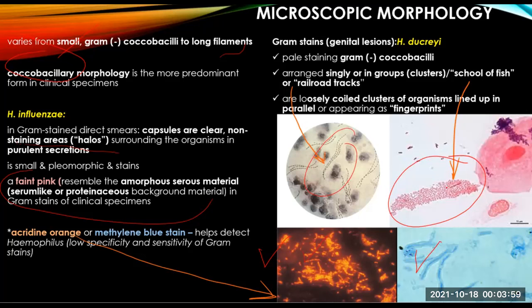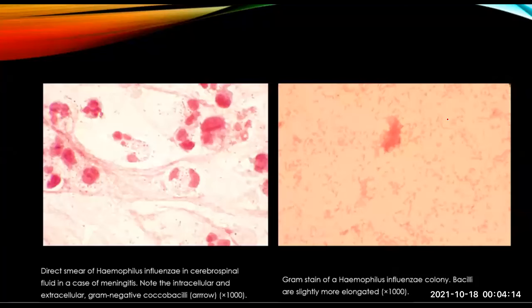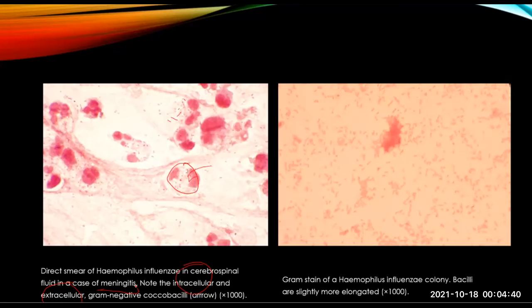These are common board exam questions: school of fish appearance, railroad tracks, or fingerprints. A direct smear of H. influenzae in CSF in a case of meningitis shows intracellular and extracellular gram-negative organisms. On the other hand, a gram stain of H. influenzae colony shows slightly more elongated bacilli.